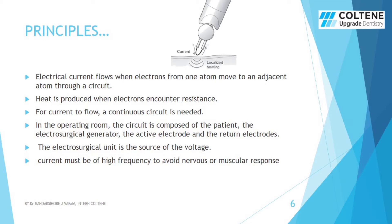Let's see the principles of electrosurgery. Electrical current flows when electrons from one atom move to an adjacent atom through a circuit. Heat is produced when electrons encounter resistance. For current to flow, a continuous circuit is needed. In the operating room, the circuit is composed of the patient, the electrosurgical generator, the active electrode, and the return electrodes. The electrosurgical unit is the source of voltage, and current must be of high frequency to avoid nervous or muscular responses.